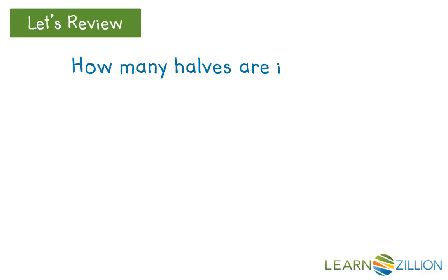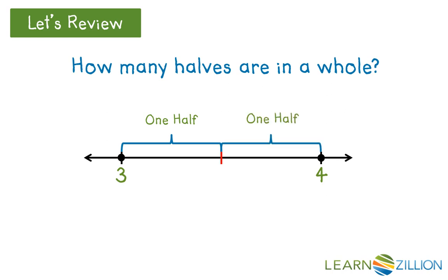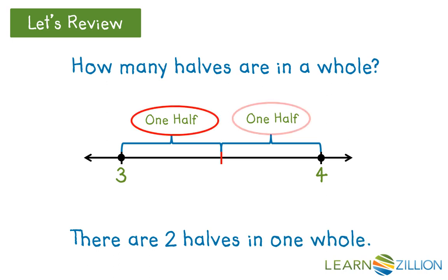Let's review. A whole number can be divided into halves. The space between number three and four on a number line equals one whole space. If we divide this space evenly, we have one half on the left side of the divider mark and one half on the right side. One half plus one half is two halves — there are two halves in one whole. Starting from three and moving a half space forward, we land on three and one half. Moving another half space forward, we land on four.